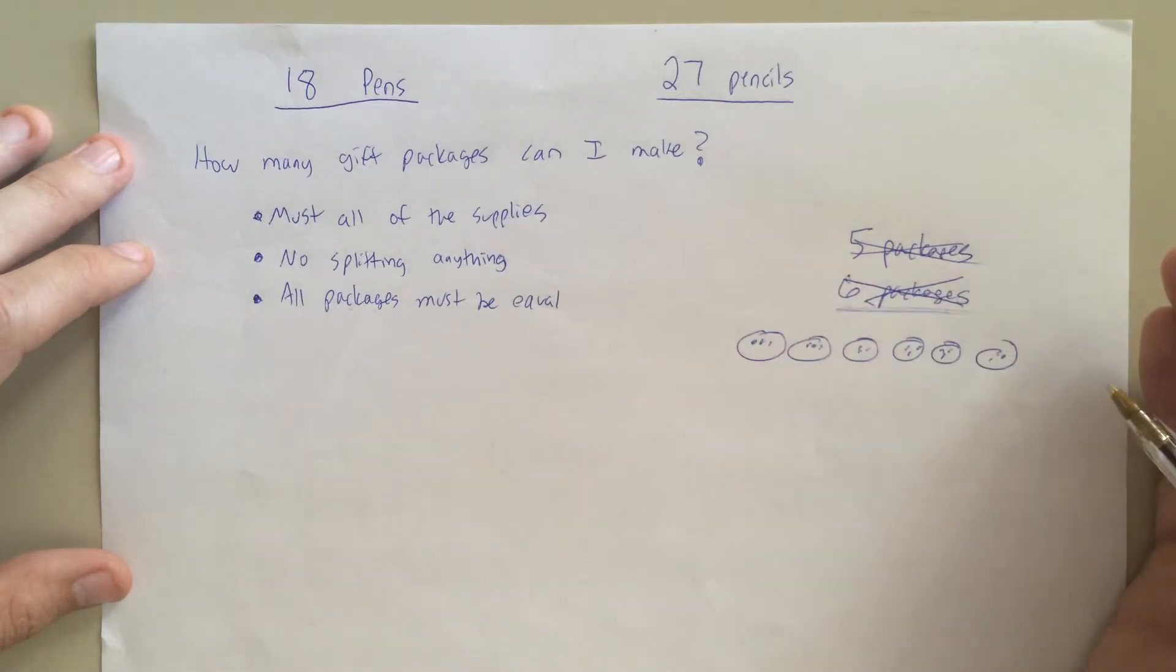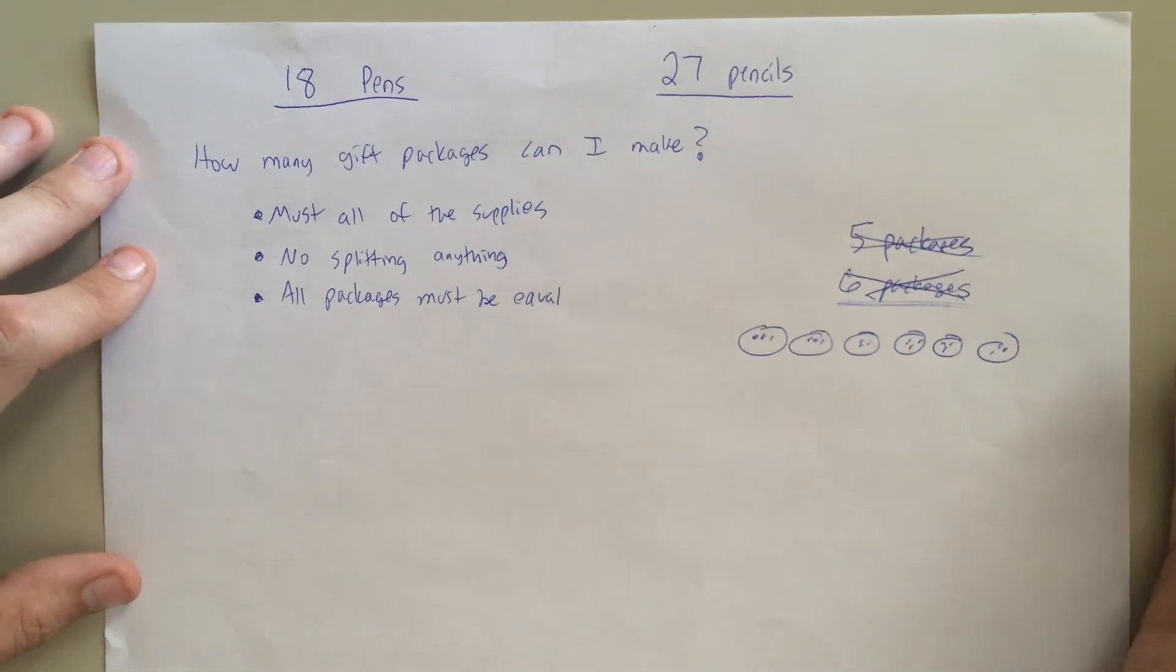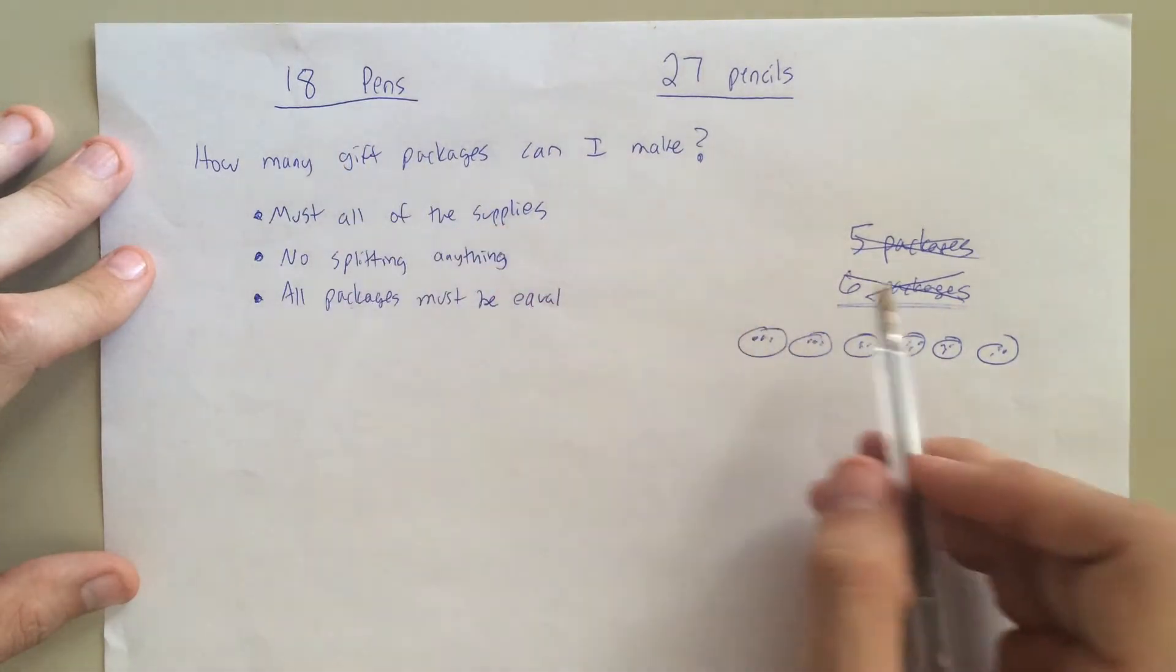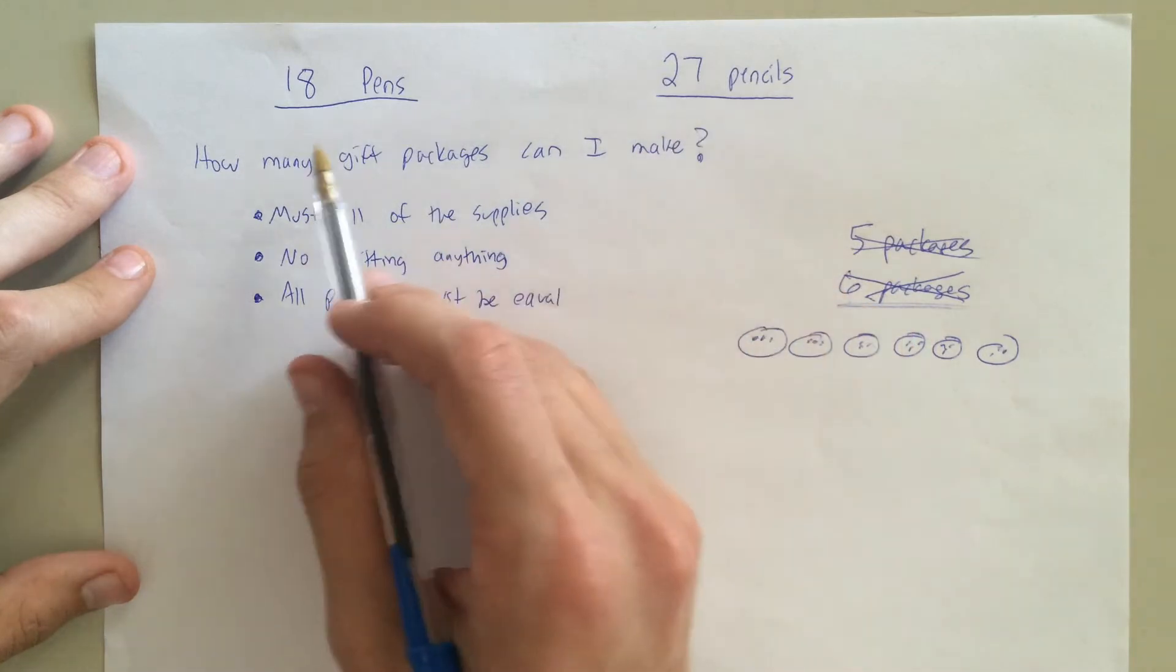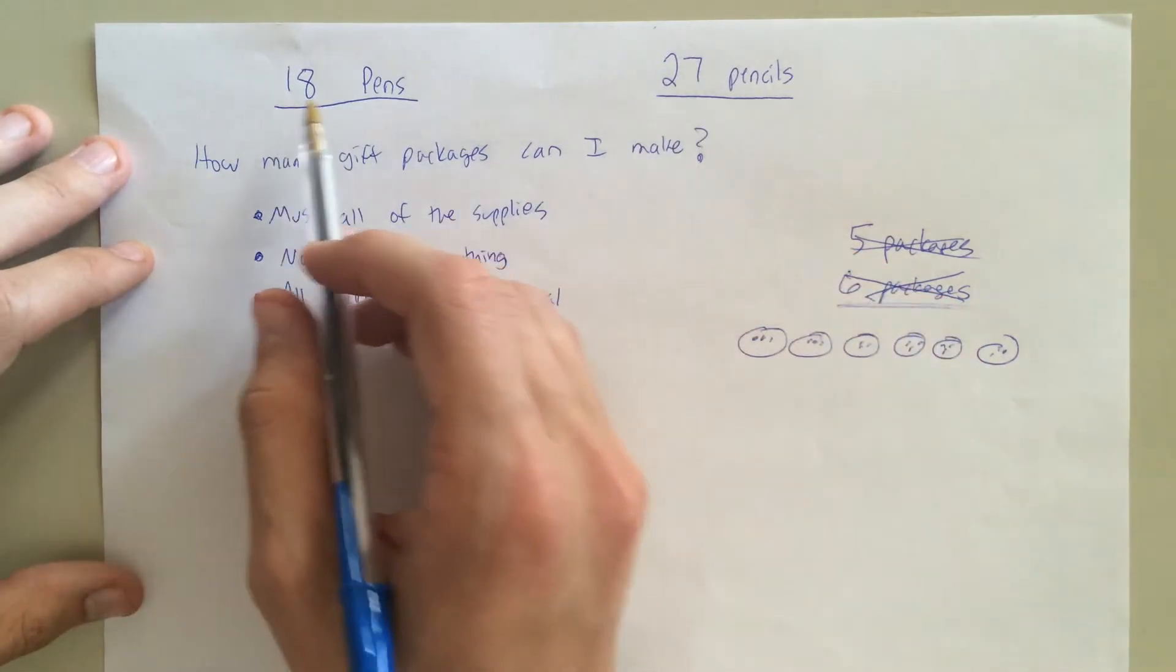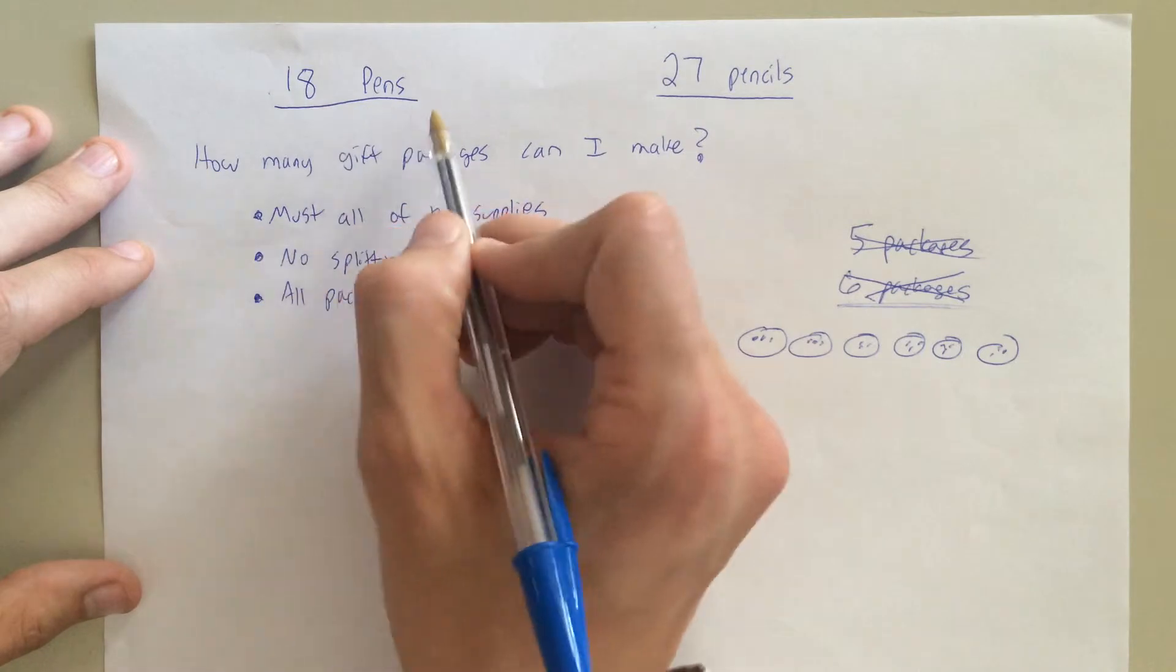So, we could keep going and doing this, and that's great, but I'm going to come up with a different route. And instead, I'm going to say, well, instead of trying to find the number that's going to work with both 18 and 27, why don't I just go one at a time?